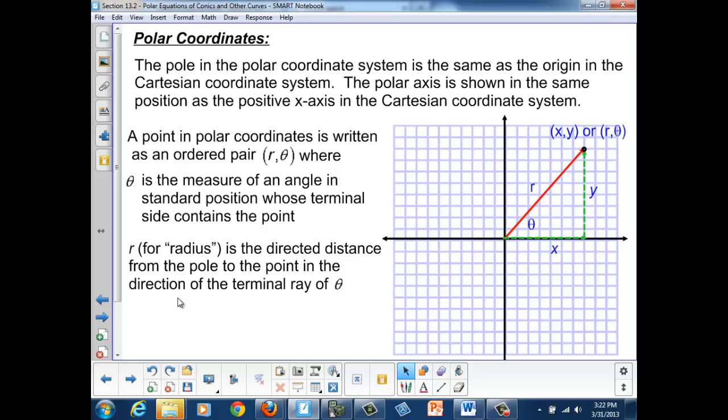Well, polar coordinates are simply another way of describing a location on a graph. Originally, we started by describing a location with an x and a y coordinate. Here, we're going to use a new coordinate system which has the same origin as our x, y, or Cartesian system.